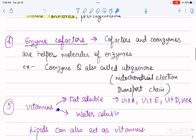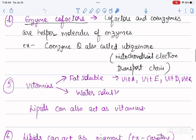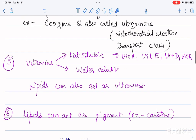The fifth role of lipids is that they act as vitamins. There are two types of vitamins: water-soluble and fat-soluble. The fat-soluble ones — vitamins A, D, E, and K — are lipids in nature.